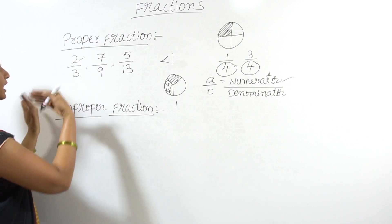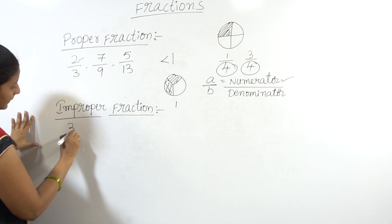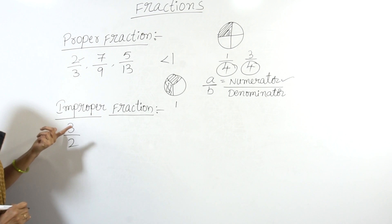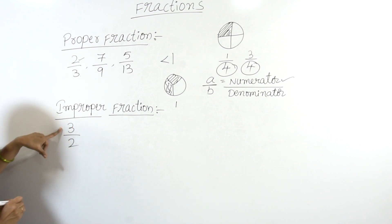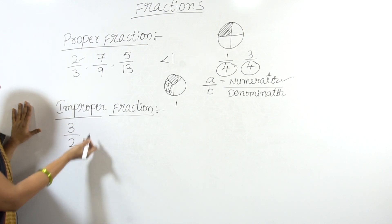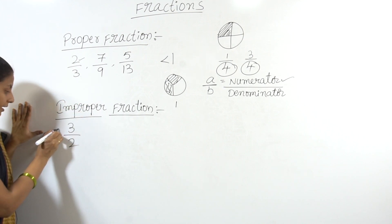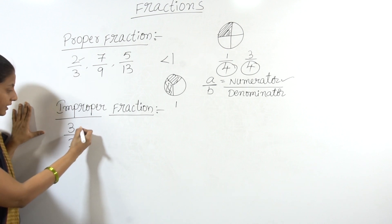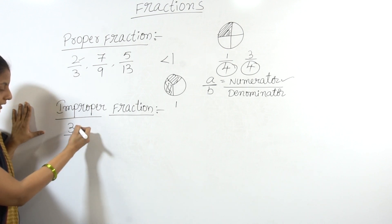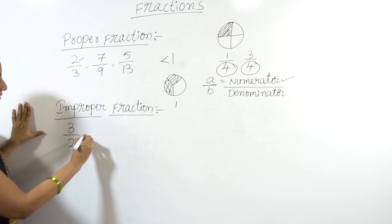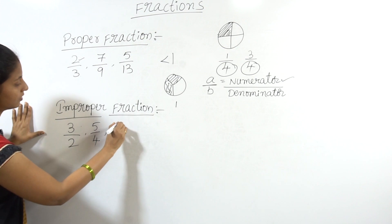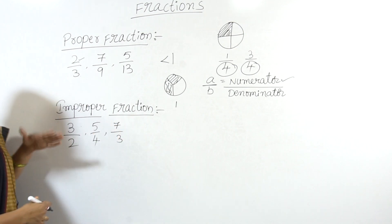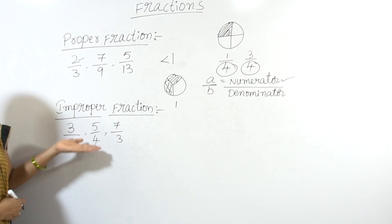Next, improper fractions. Improper fractions is the opposite of proper fractions — the numerator is greater. Fractions that have the numerator equal to or greater than the denominator are called improper fractions. For example: 5 by 4, 7 by 3 — these are improper fractions.